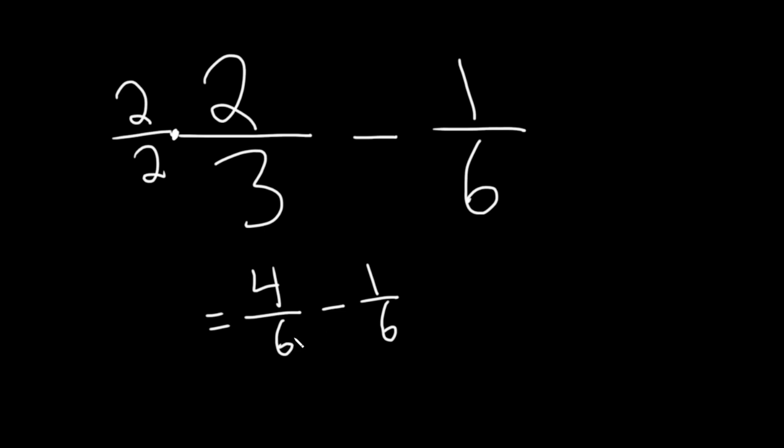And now because we have the same denominators, we can subtract. So you keep that common denominator and you subtract 4 minus 1. And 4 minus 1 is 3, so we get 3 over 6.